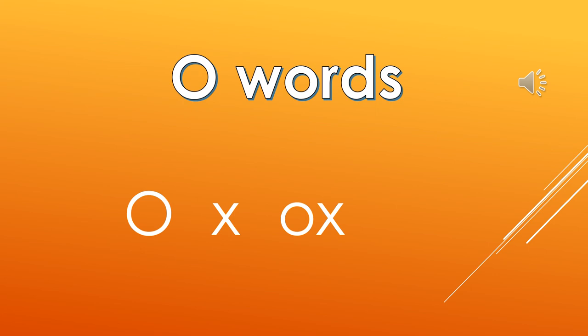Now we will be doing the next OX words, that is O and X. The sound of O is 'O' and the sound of X is 'KS'. So OX is 'OX'. What is it? OX.